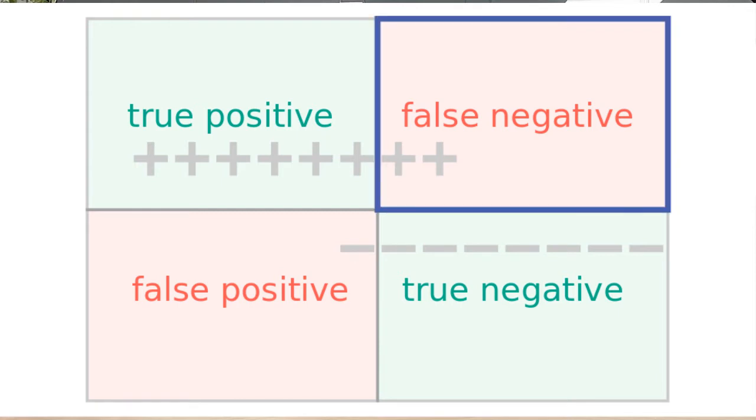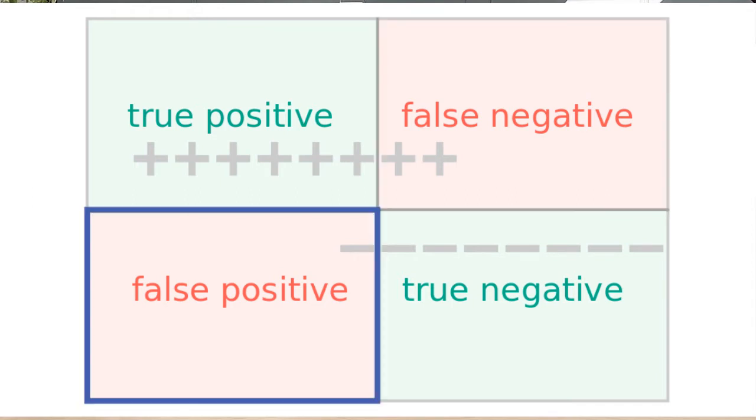On the other hand, you will also have some healthy people who will be classified as infected, the so-called false positives. The people with their actual health situation corresponds with the outcome of the tests are called true positives and true negatives.